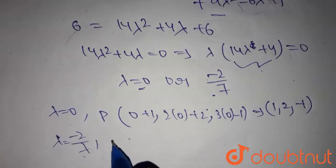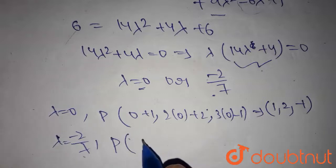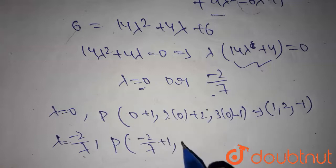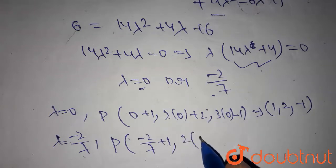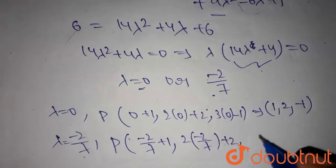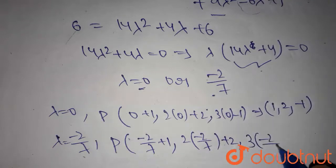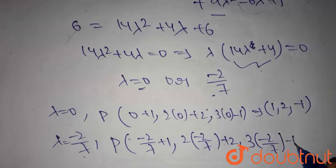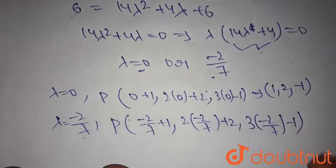For lambda equals minus 2 by 7: minus 2 by 7 plus 1 comma, 2 times minus 2 by 7 plus 2 comma, 3 times minus 2 by 7 minus 1. Here we get 7 minus 2 which equals 5 by 7.